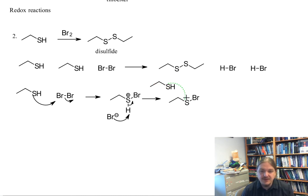So we actually need to have nucleophilic attack at sulfur. There we go. Off goes the bromine. And then once again, we have this extra proton on the sulfur. We have a bromide anion ready to remove it. And then that gets us our disulfide and the two equivalents of HBr.